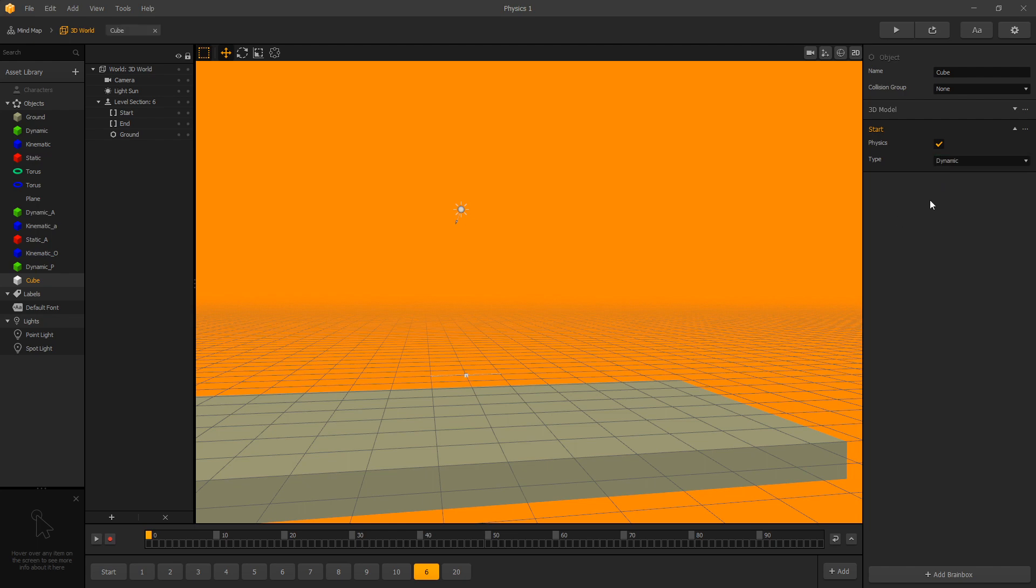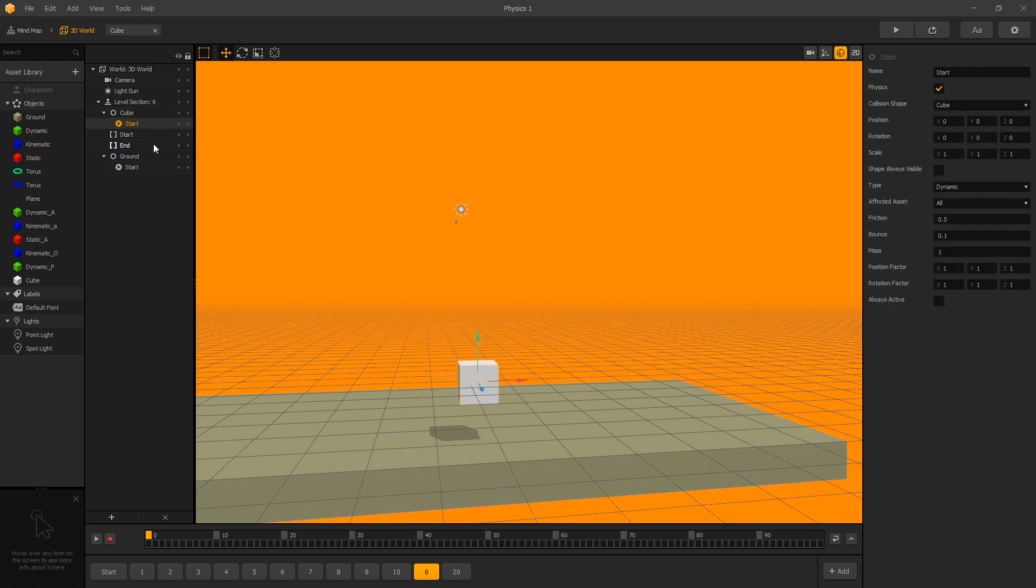If you want to look at all the options that are available for physics in BuildBox you can add a cube to your scene and turn on collision editor by clicking on this icon in the corner and then when you select a start collision you have all these options for physics and we're planning to make detailed videos about all the options we have so stay tuned for that.